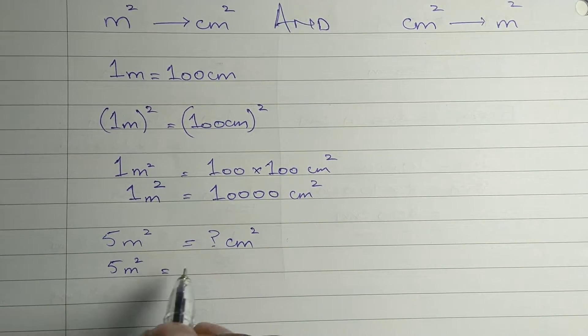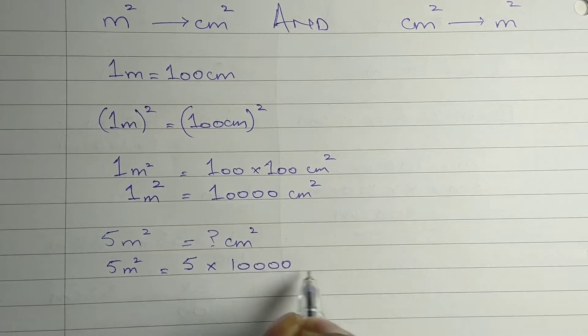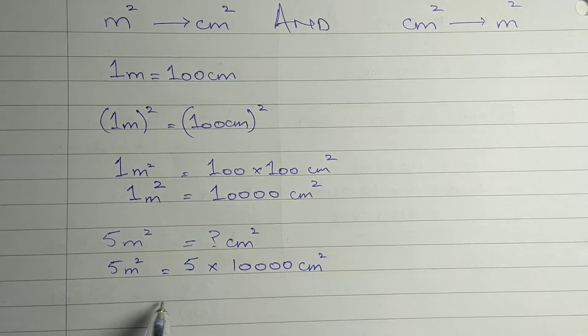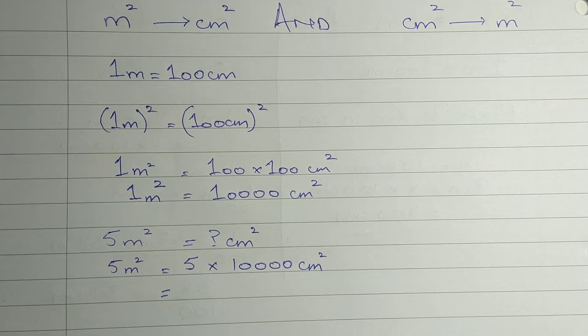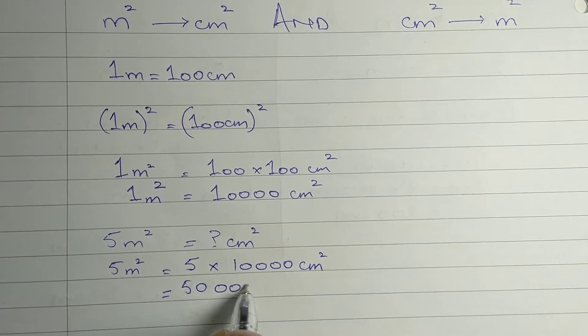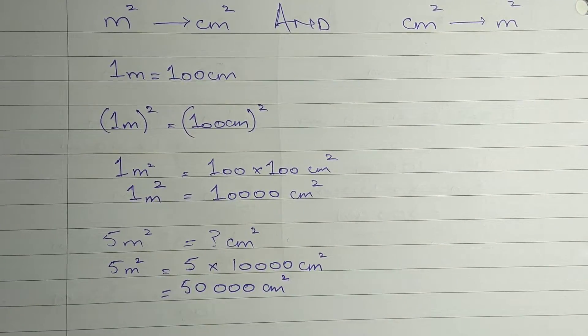We know that 1 meter square equals 10,000 centimeter square. So 5 meter square will be 5 into 10,000 centimeter square. This will give us 50,000 centimeter square.